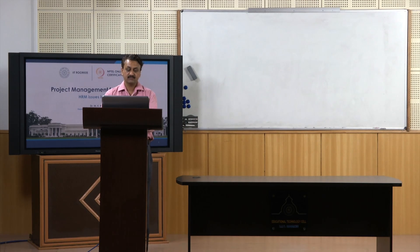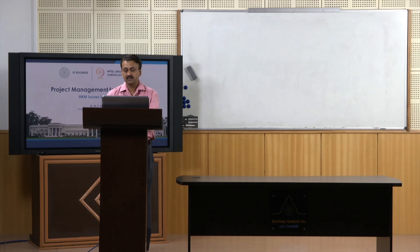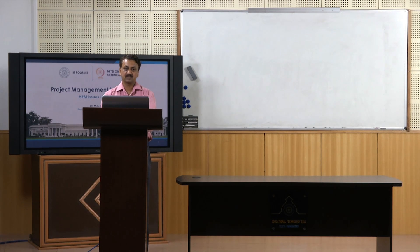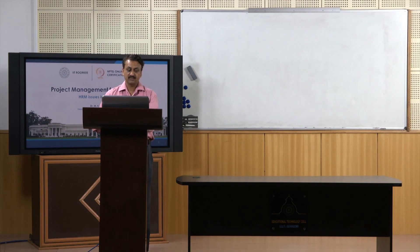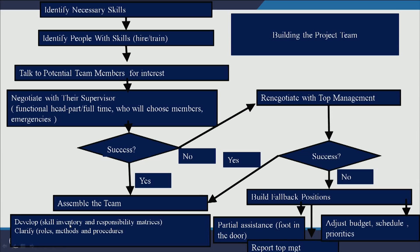If top management cannot help, you need to adjust your budget and get a person from outside, change the schedule of the project by delaying some activities, or change priorities — doing an activity later rather than first — to get the right person for a particular activity. Once the team is assembled, develop it and clarify roles and responsibilities.